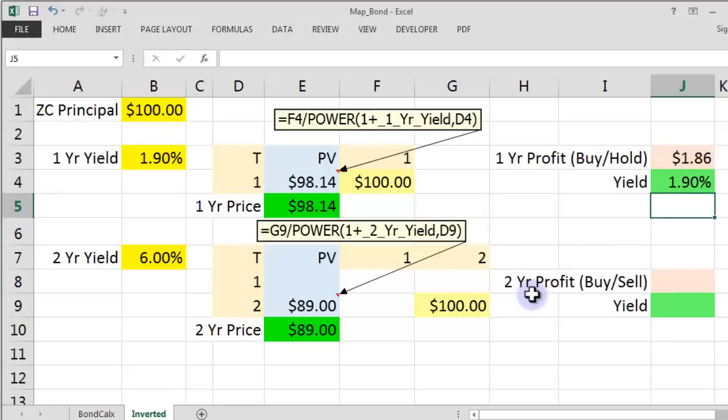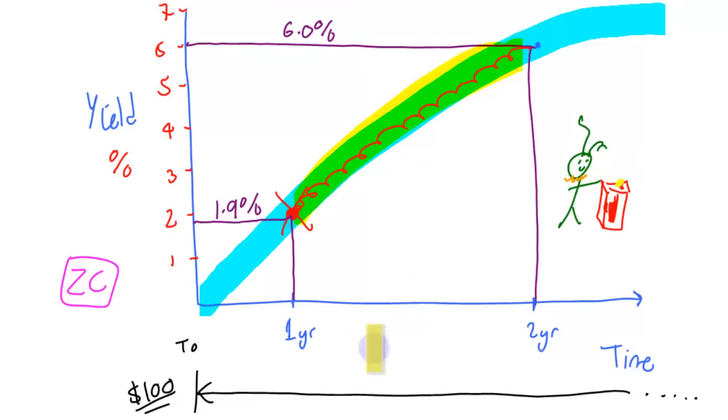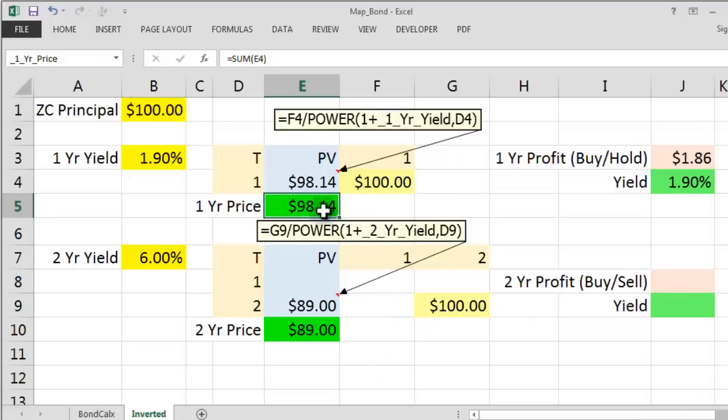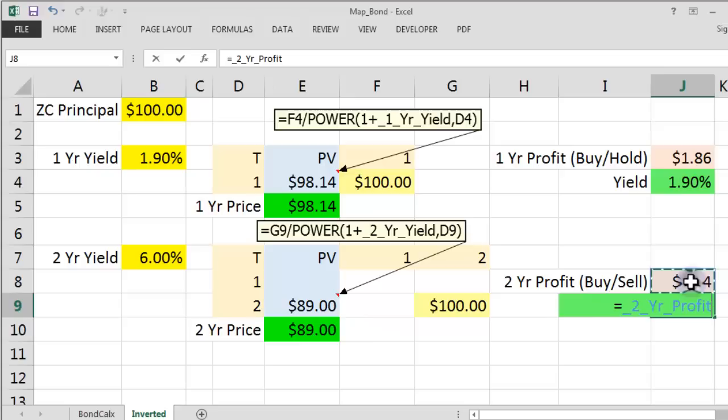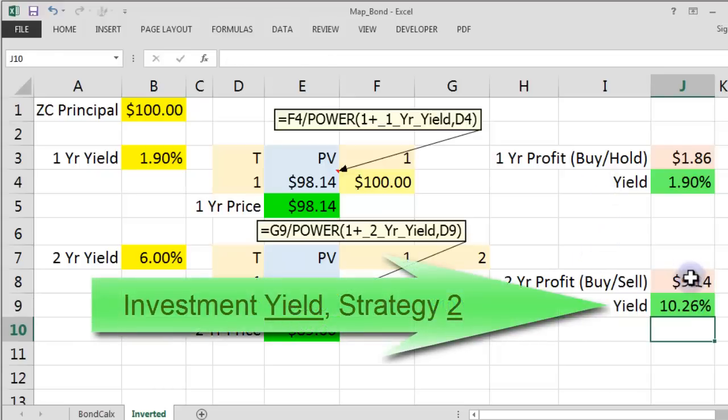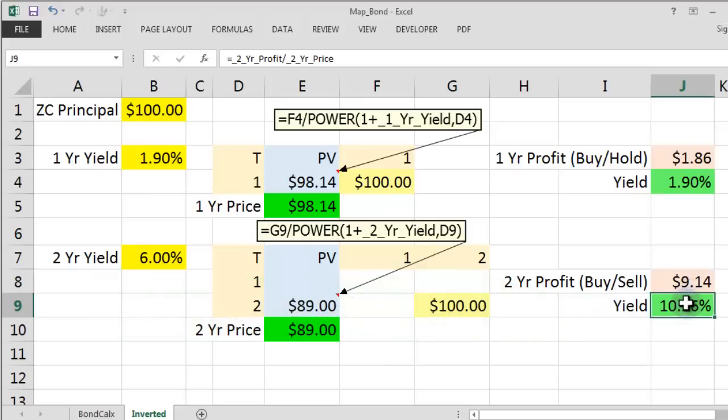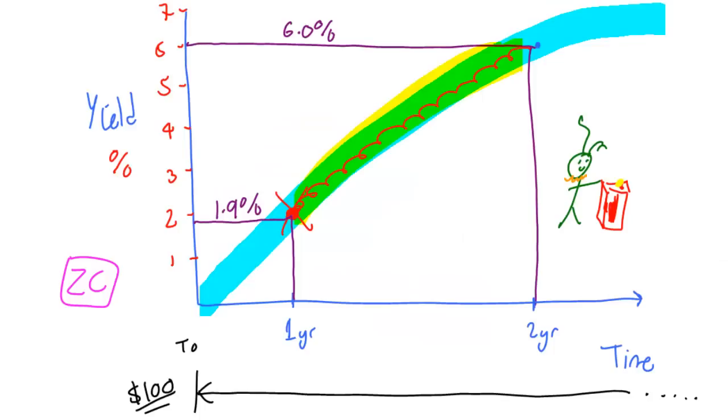Now let's look at strategy two. We're going to buy at 89 and sell one year later. Once we've rolled down the yield curve we will sell for 98.14. That gives us a profit of 9.14. The yield is going to be that divided by the price we paid, which gives us 10.26% yield. Much more profit made, much less money spent, much higher yield. We're going to go for strategy two if we can be guaranteed that is the yield curve and it's fixed in time.